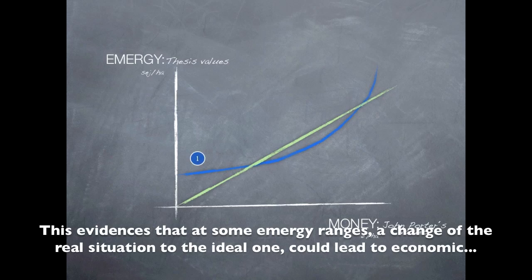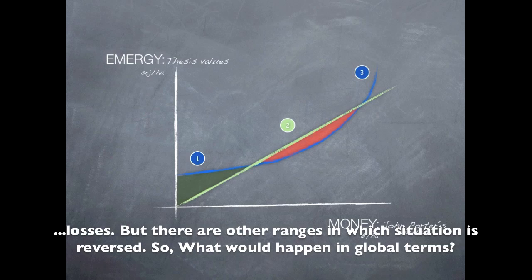These evidences that at some energy ranges, a change of the real situation to the ideal one could lead to economic losses. But there are other ranges in which situation is reversed.